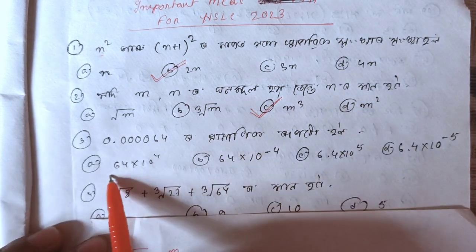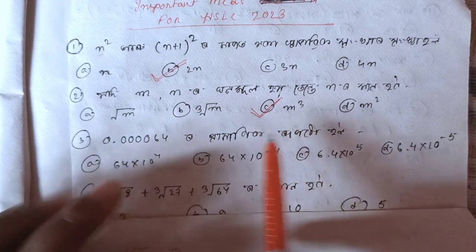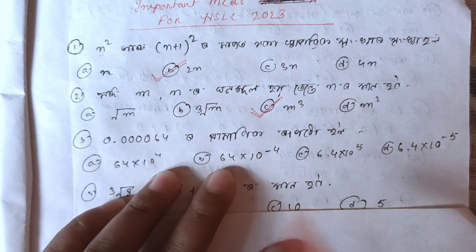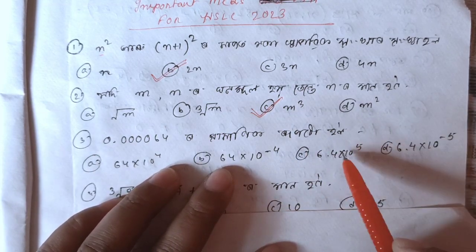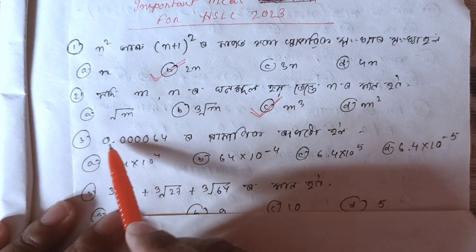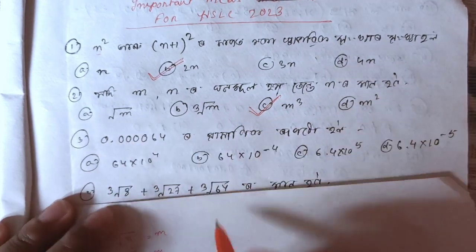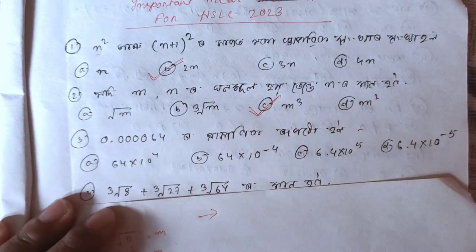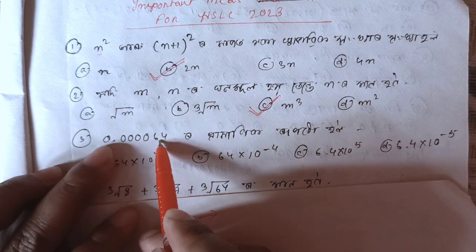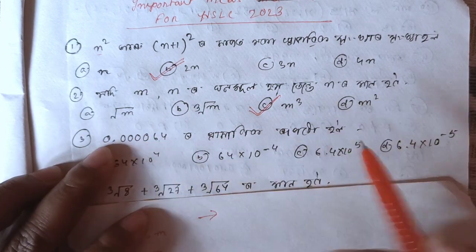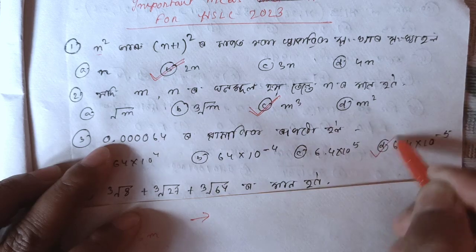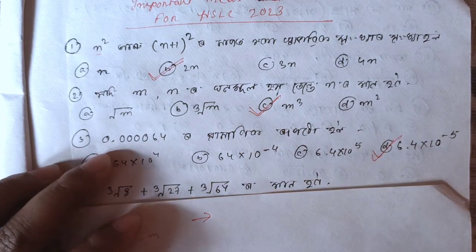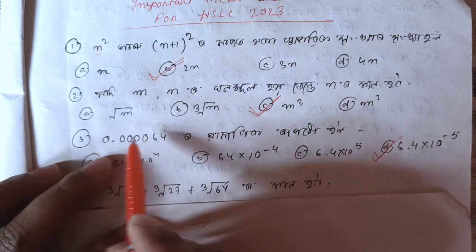If you do not do it, it will cancel, so it will be a huge factor. If you do that, the value will be minus, so it will be minus d2, 6.42, 4 into 10 to the power minus 5.